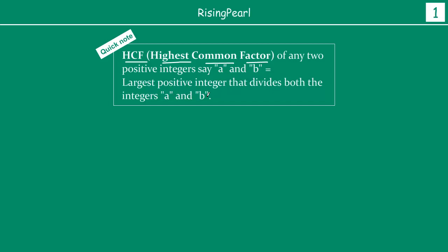Let's understand this in the context of two numbers. Let's say we have 10 and 18. If I have to find the HCF of 10 and 18, I am looking for the largest number that divides both 10 and 18. We have seen this in our earlier classes — we start by finding all the factors of each number.